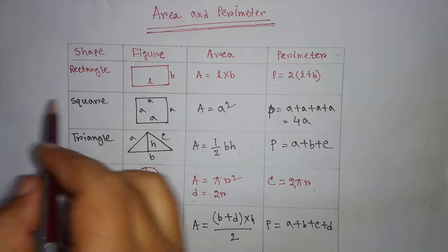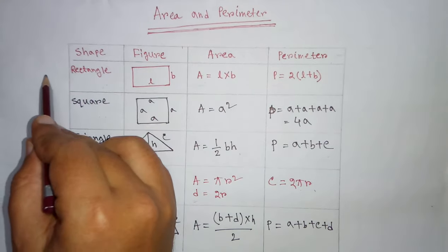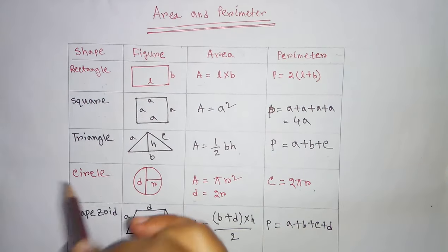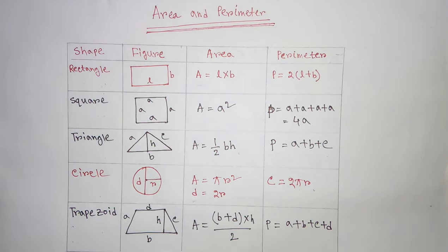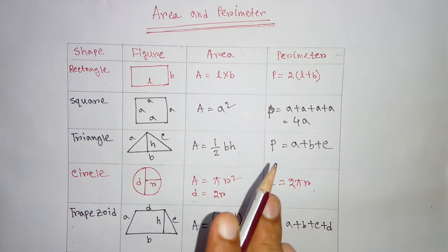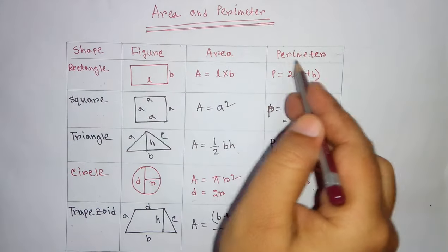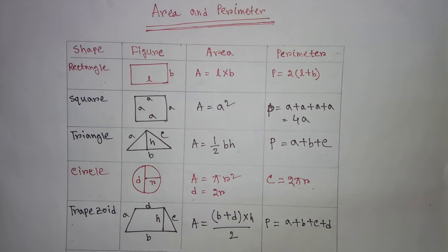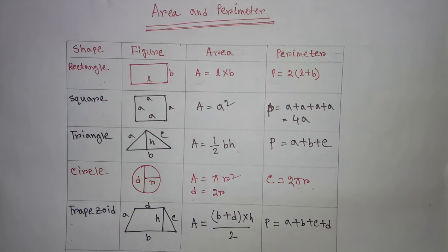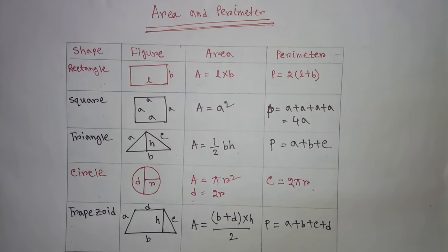So, by this, we are having the formula for rectangle, square, triangle, circle and trapezoid. By this, we end up our session. This is very important because we are having all the area and perimeter formula for all these items. Thank you for watching. And if you like the video, please subscribe to our channel. Thank you.